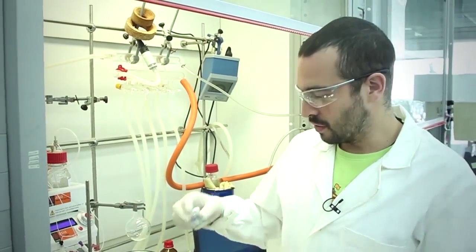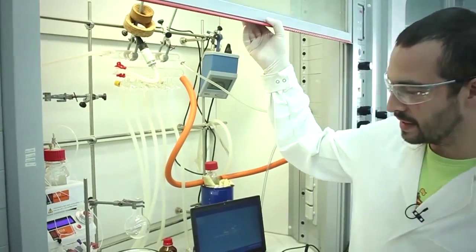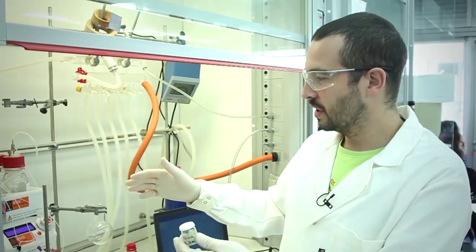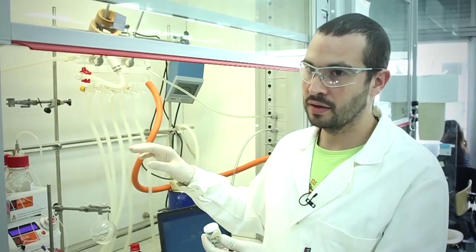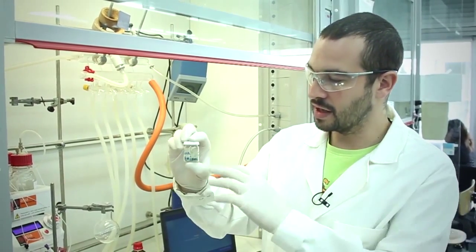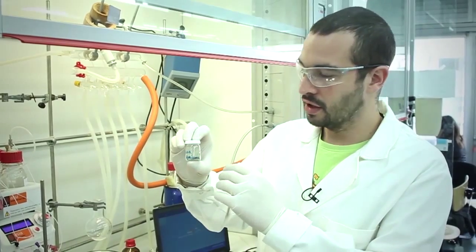Okay, so what we are going to do is an example of a continuous flow process in which we will do the aminoxylation of propanal with nitrosobenzene. This is the catalyst. It is polystyrene resin in which we have immobilized proline.